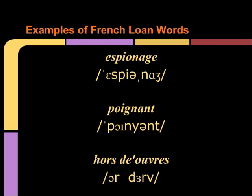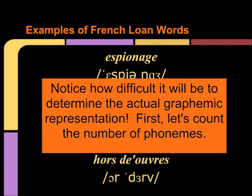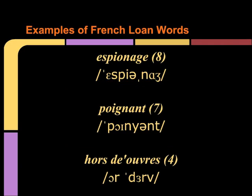Other languages brought loan words too, but with French we often took their direct spellings as well. As you see in these examples, these are words that we use exactly the same way in English — we didn't change their spellings — and we try to maintain their French pronunciation, though with some changes. Let's say the words: espionage, poignant, hors d'oeuvre. The problem is we see the pronunciations but they don't seem to help us by looking at the spelling, because these are loan words.